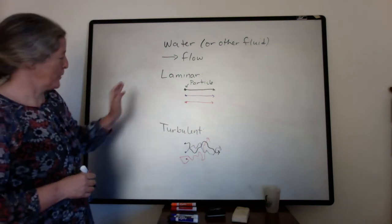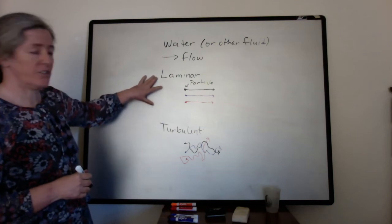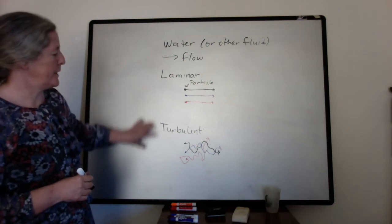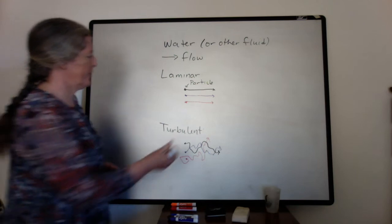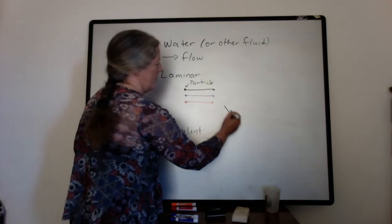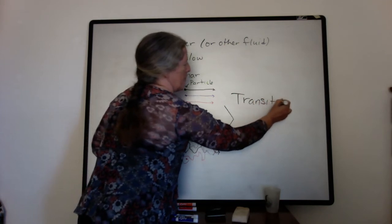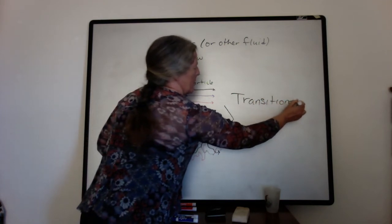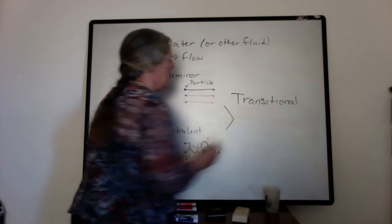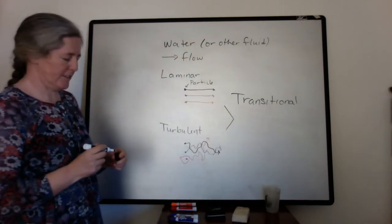Like most things in nature, there's not a strict division between laminar flow and turbulent flow. Between these two we have transitional flows, and these have characteristics of each of them.